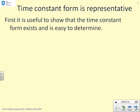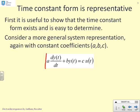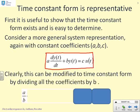The time constant form is representative. What we want to show first is that this is always a form that you can get to. So let's consider a more general representation of a first-order system. Here it is: a dy/dt + by(t) = c u(t). What we want to show is that from this general form with three parameters a, b, and c, you can always get to the time constant form.